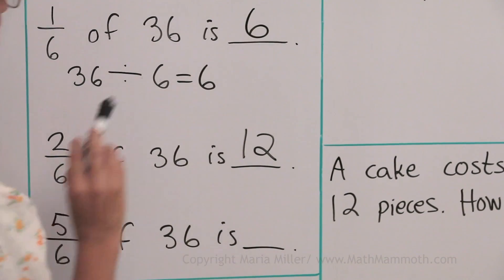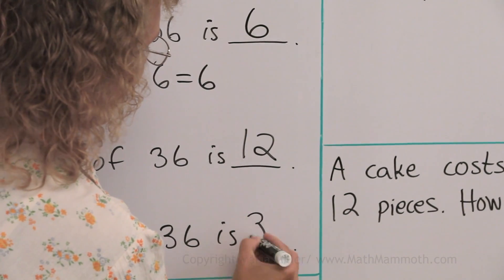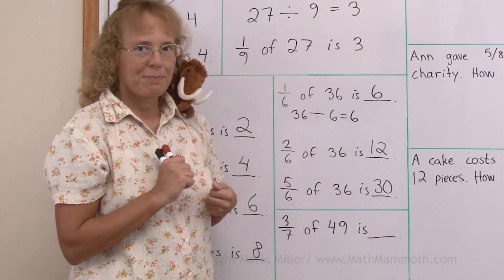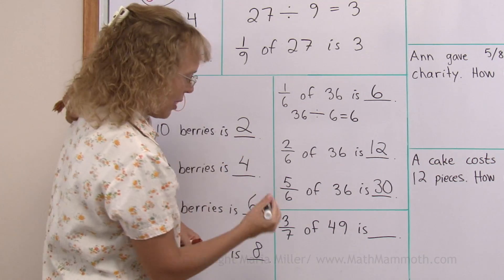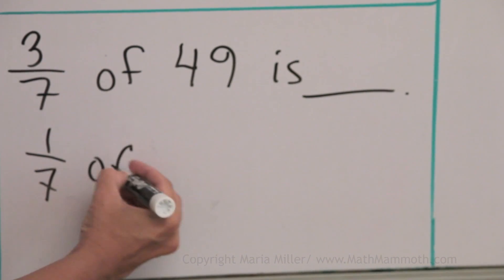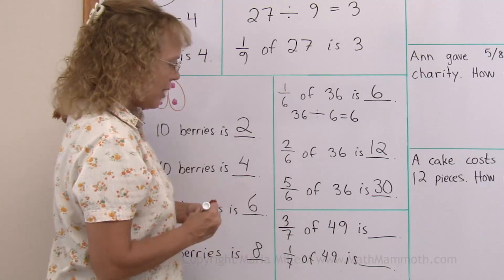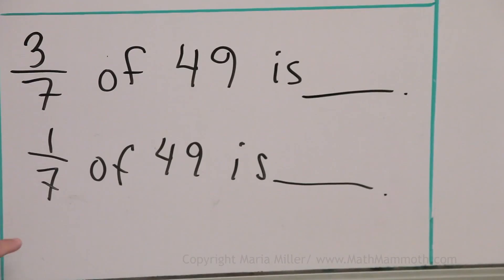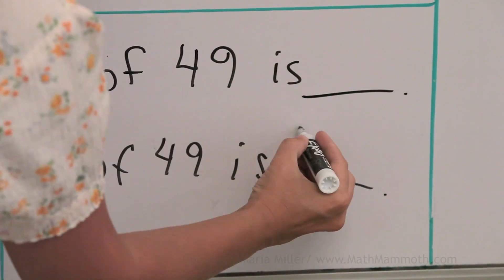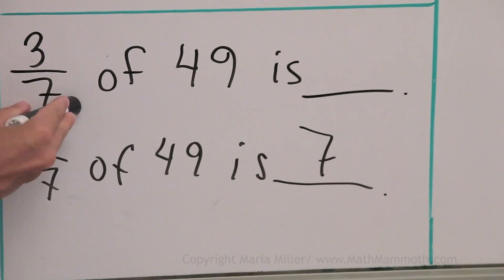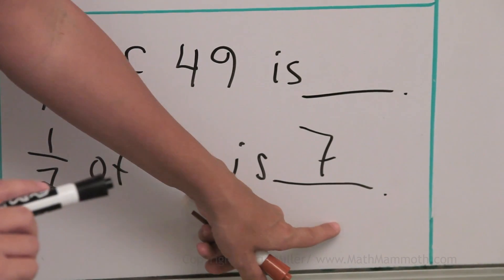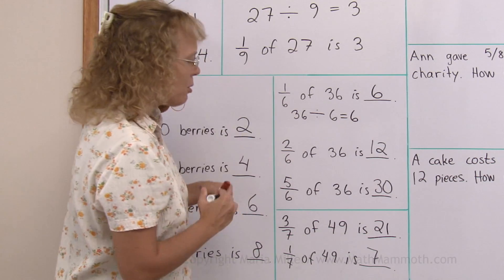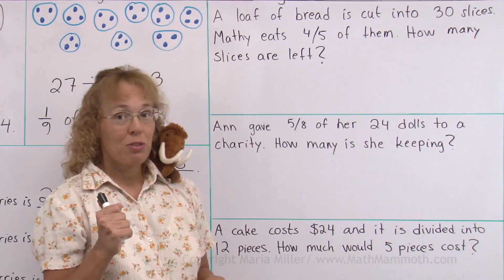Three sevenths of forty-nine: you need to first think about an easier problem, which is one seventh part of forty-nine. One seventh part of forty-nine is just a plain division problem: forty-nine divided by seven. So forty-nine divided by seven equals seven — it's basically the division problem. Now going back, since one group is seven, then three of those groups will have three times seven, or twenty-one.